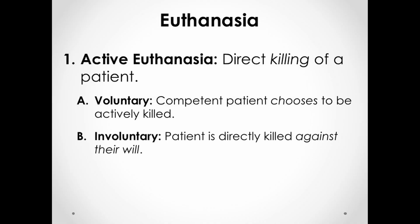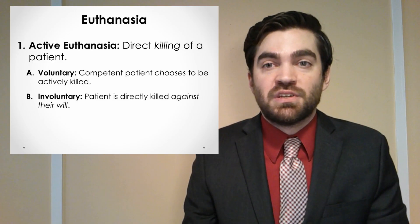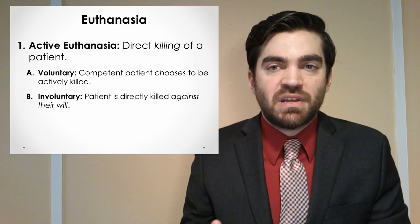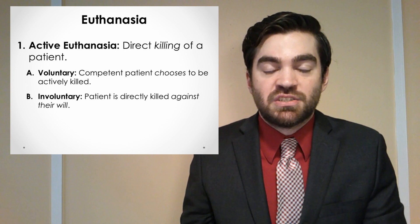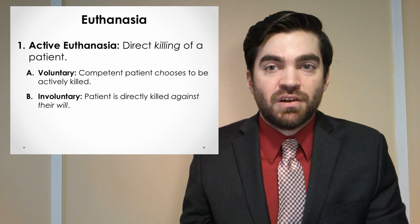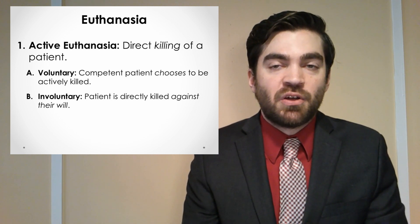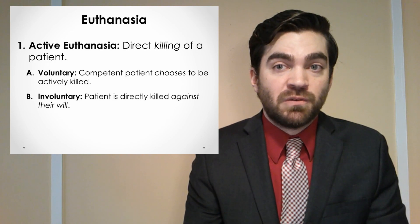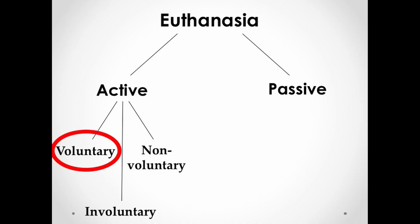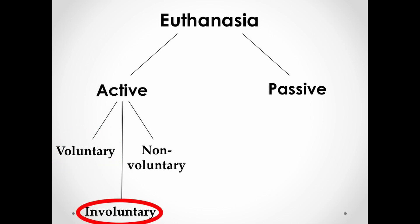Involuntary active euthanasia would involve directly killing somebody against their will. So they have said very clearly that this is not what they want, they've chosen to continue living, but somebody kills them anyway. In most cases, this is just a case of murder, where one individual is killing another against the victim's will. That gives us the voluntary cases where it's the patients themselves making the informed choice to opt for euthanasia, and the involuntary cases where the patient is being killed against their will.